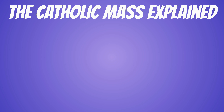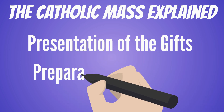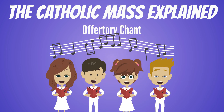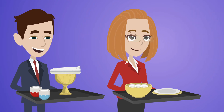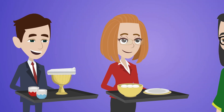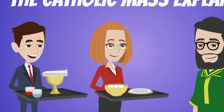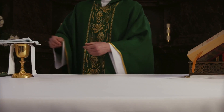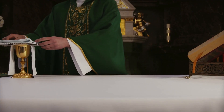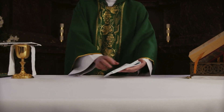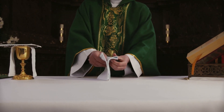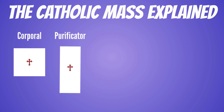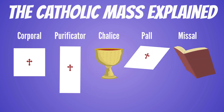The Liturgy of the Eucharist begins with the presentation of the gifts and preparation of the altar. At this time, the offertory chant begins. Representatives of the people express their participation by bringing forward the bread and wine that will become the body and blood of Christ. The celebrant blesses and praises God for these gifts and places them on the altar, which is the place of the Eucharistic sacrifice. The ministers place the corporal, the purificator, the chalice, the pall, and the missal on the altar.